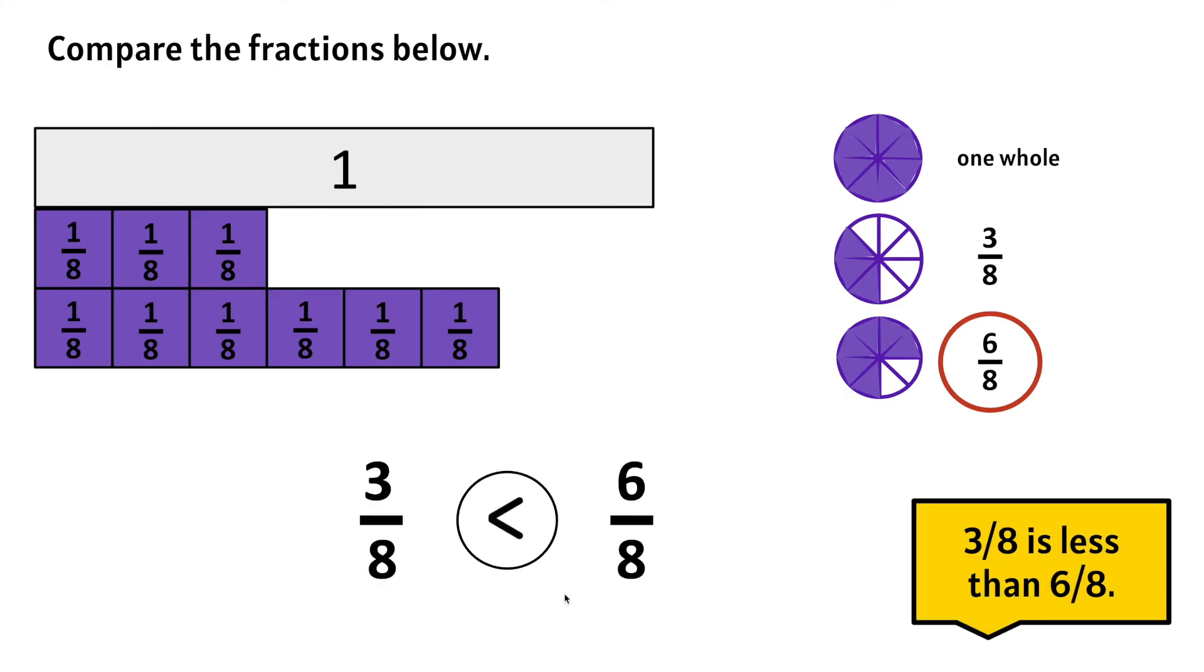Remember, when we're comparing fractions with like or the same denominator, in this case 8 or eighths, we know that we can look at the numerator to determine which fraction is greater. The 6 is greater than the 3. So 6 eighths is greater than 3 eighths. But that's only because the denominators are the same.